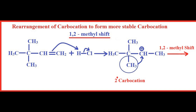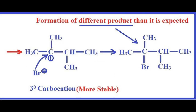Here is what we were discussing about the rearrangement of the first formed carbocation. Here it is a secondary carbocation that is first formed, which then rearranges to give a more stable carbocation. A 1,2-methyl shift occurs — meaning the methyl group shifts between two nearby carbon atoms — and a more stable tertiary carbocation is formed from the secondary carbocation.